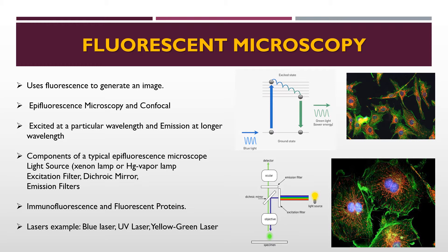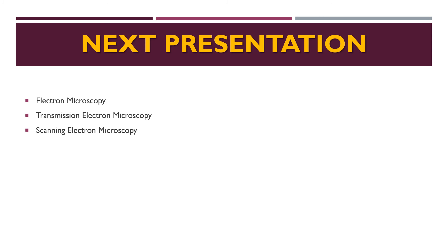Fluorescent microscopy can be used in immunofluorescence, where specific antibodies are tagged with a fluorophore molecule that emits fluorescence when bound to a specific antigen. Fluorescent proteins are also available. A major limitation is photobleaching, where fluorophores lose their ability to fluoresce over time, so imaging should be performed quickly. However, some fluorophores are stable and remain fluorescent for a considerable time. The fluorescent microscope is the most widely used technique in biological research, as it allows study of fine cell details such as the nucleus, proteins, cell structures, and other components. In the next presentation, transmission electron microscopy and scanning electron microscopy will be covered.